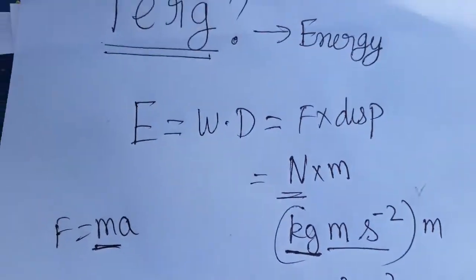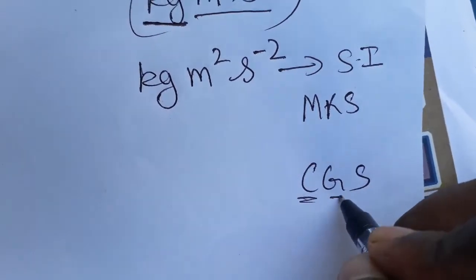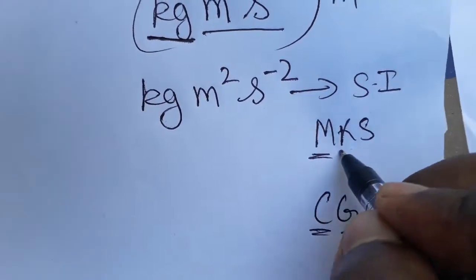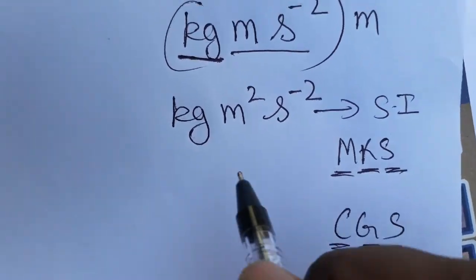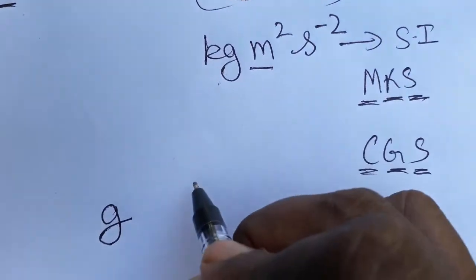Now what is erg? That is our question. Erg follows the CGS system: centimeter, gram, second. In MKS it is meter, kilogram, second. That means kilogram we should take as gram, and meter we should take as centimeter.